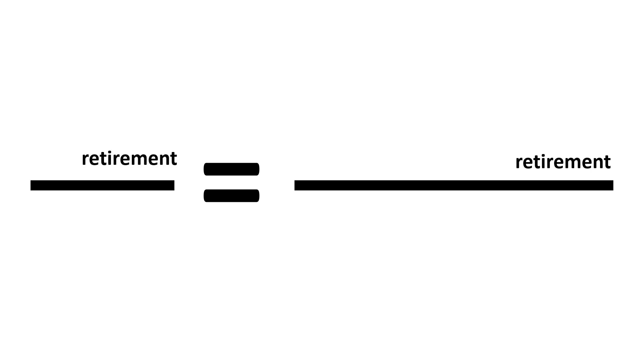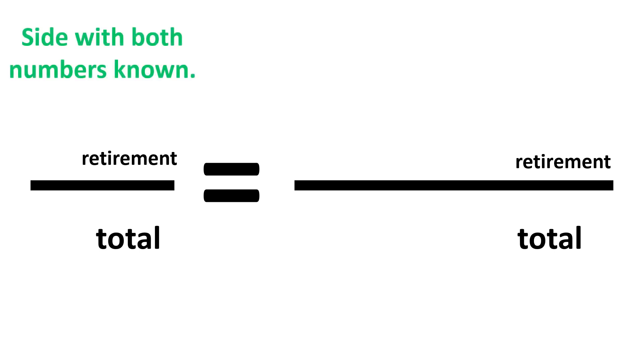To set up the cross-multiply and divide method, we write two division bars separated by an equal sign. Then we write in the units for each number. The top numbers must have the same units as each other, and the bottom numbers must have the same units as each other. The pair of known numbers go on the left — in this case, the fraction of his investment money that Philip wants to put in a retirement account.